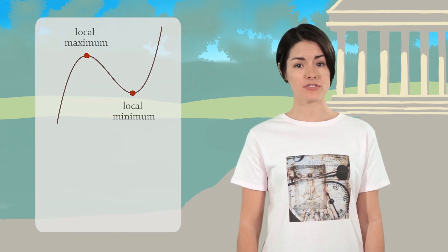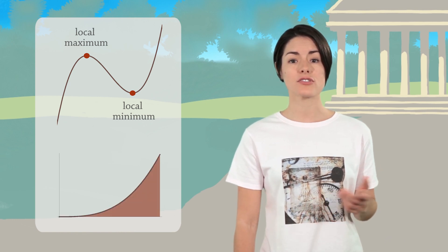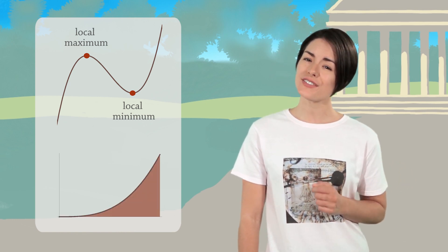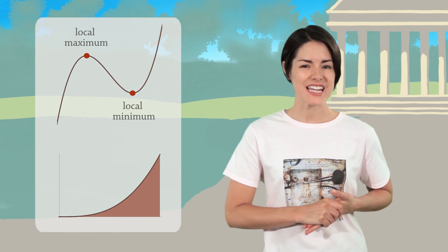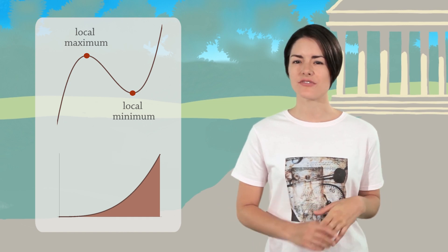Fermat also solved several basic calculus problems. He developed a way to find the maxima and minima of certain functions and was even able to compute the area under some basic curves. At first, this may not sound impressive.